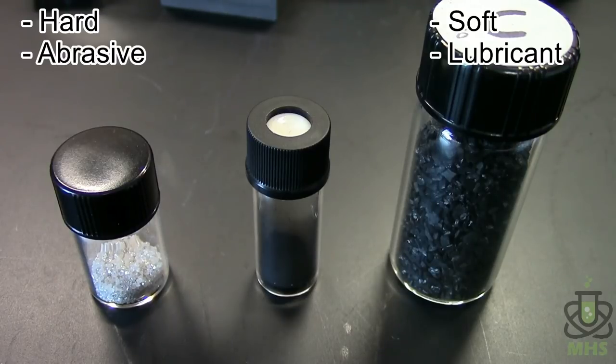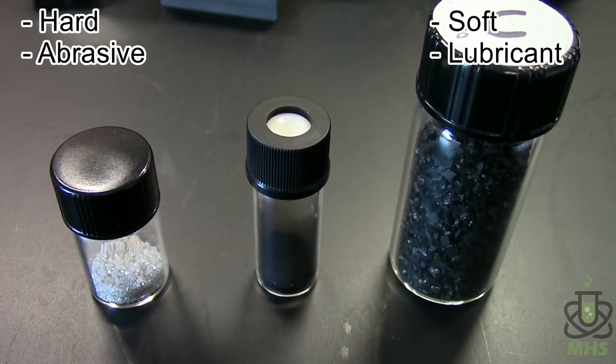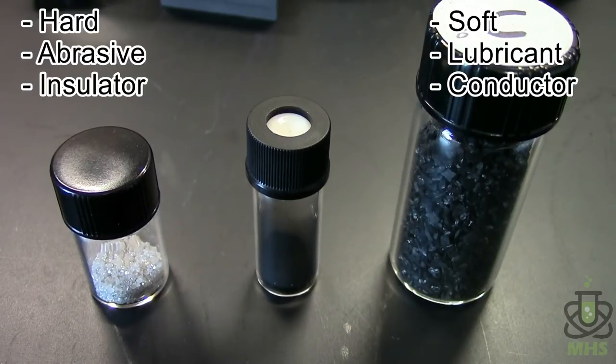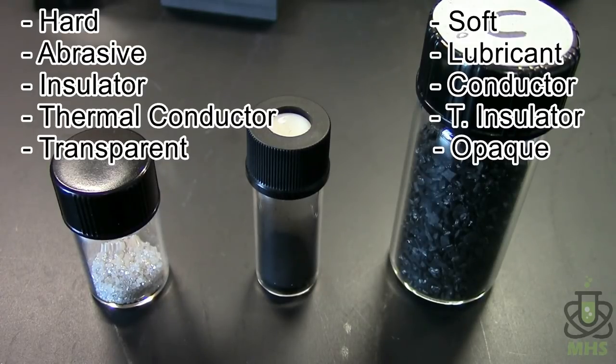Graphite is a good conductor of electricity. Interestingly enough, it only conducts along the plane of the hexagons, not in the other direction. But regardless, it's a pretty good conductor. And diamond is a really good insulator. Diamond, on the other hand, is a great thermal conductor, but a lot of forms of graphite are good thermal insulators. Graphite is black and opaque, and diamond is generally transparent. So really cool that there's this wide range of properties from just the one element.